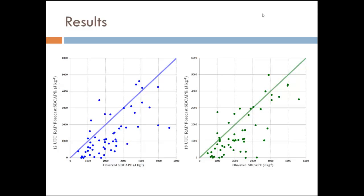Especially on that 12Z case, there are just a couple of data points that are really overestimated — that's why I separated out the numbers for underestimated cases, because a forecast of over 3,000 joules per kilogram when it was supposed to be about 15 would throw off your averages a lot. But the main thing to note from these graphs is that almost all of the cases were underestimated, and sometimes very significantly so.